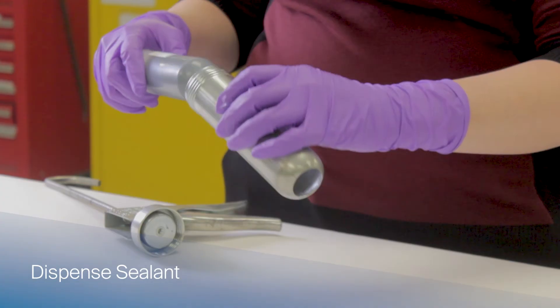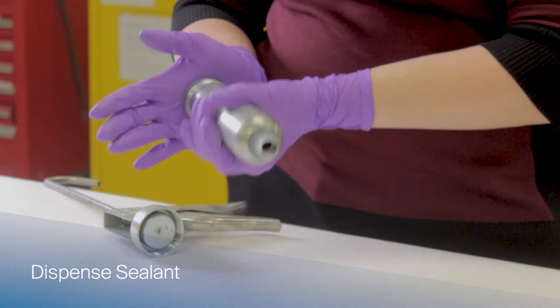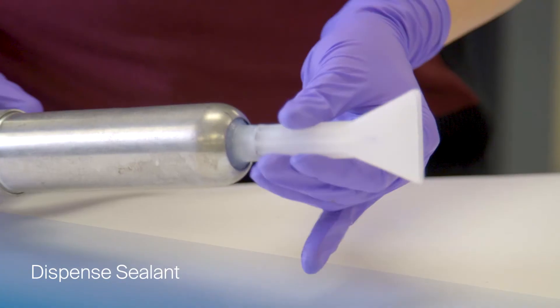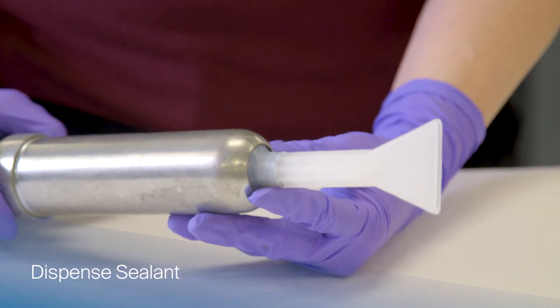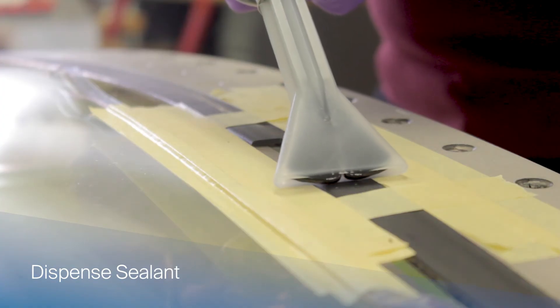Place the cartridge into the dispenser, attach the nozzle, and apply the sealant to the cleaned and primed surface.